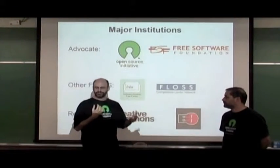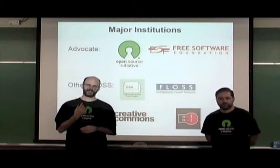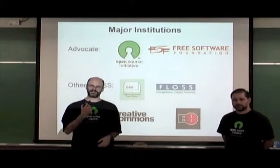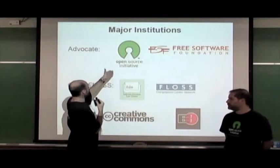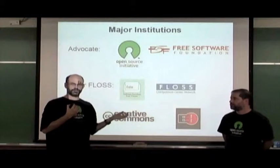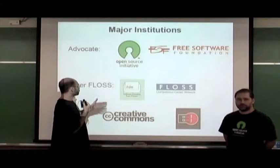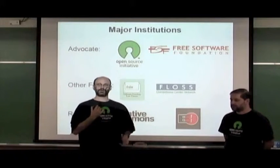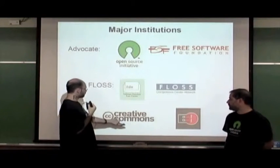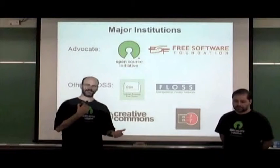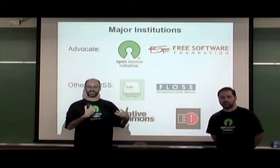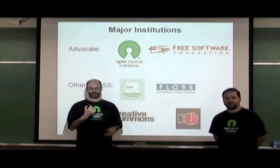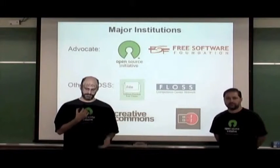There are some major institutions around the FLOSS ecosystem you can get in touch with to help improve this kind of software. The Open Source Initiative and the Free Software Foundation are two major ones we've mentioned. The Software Freedom Law Center, for example, provides legal support for free software projects. Creative Commons is a family of licenses for opening and sharing non-software materials like artistic products, texts, and images.